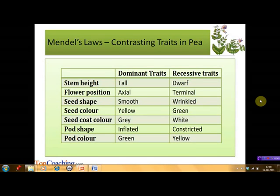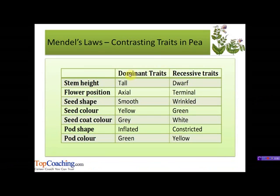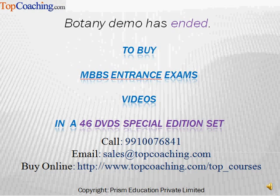By performing monohybrid crosses for various traits, Mendel found out which characters are dominant and which are recessive. For stem height, tall is dominant and dwarf is recessive. For flower position, axial is dominant whereas terminal is recessive. For seed shape, smooth is dominant and wrinkled is recessive. For seed color, yellow is dominant over green. For seed coat color, gray is dominant over white. For pod shape, inflated is dominant whereas constricted is recessive. For pod color, green is dominant whereas yellow is recessive.